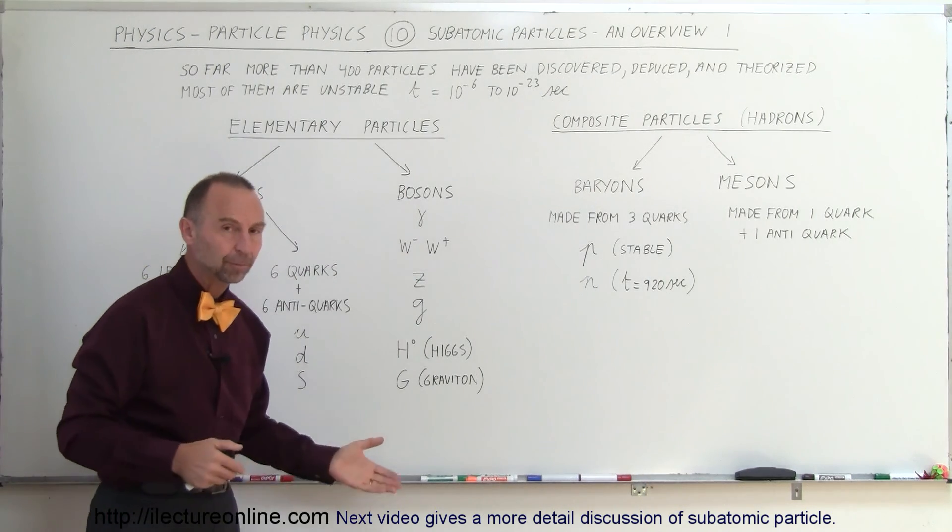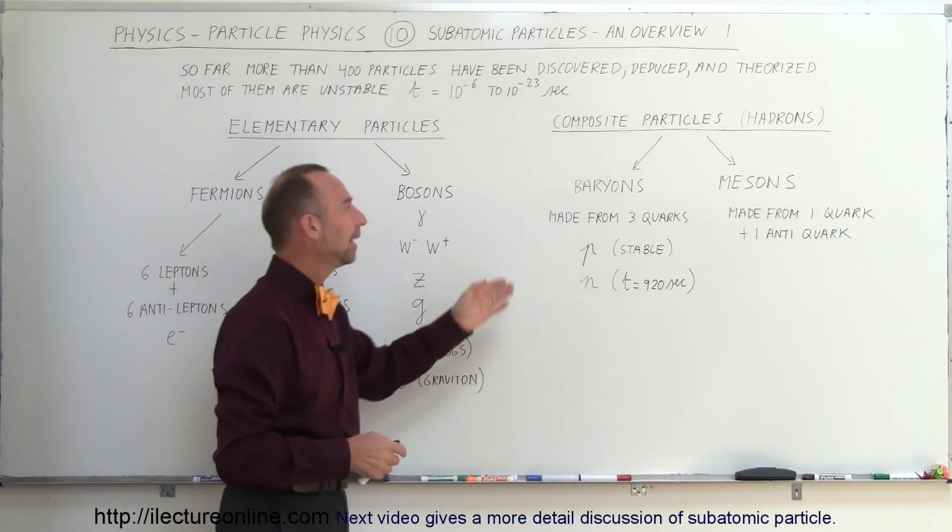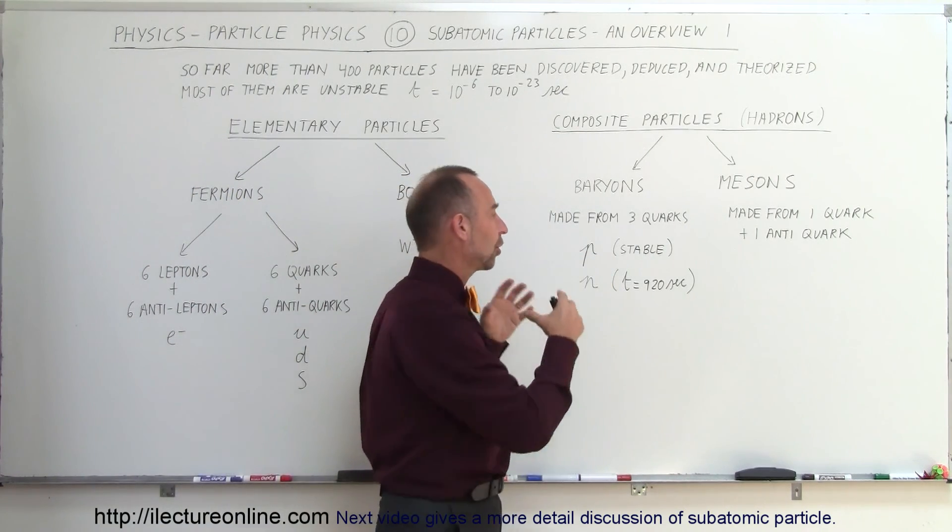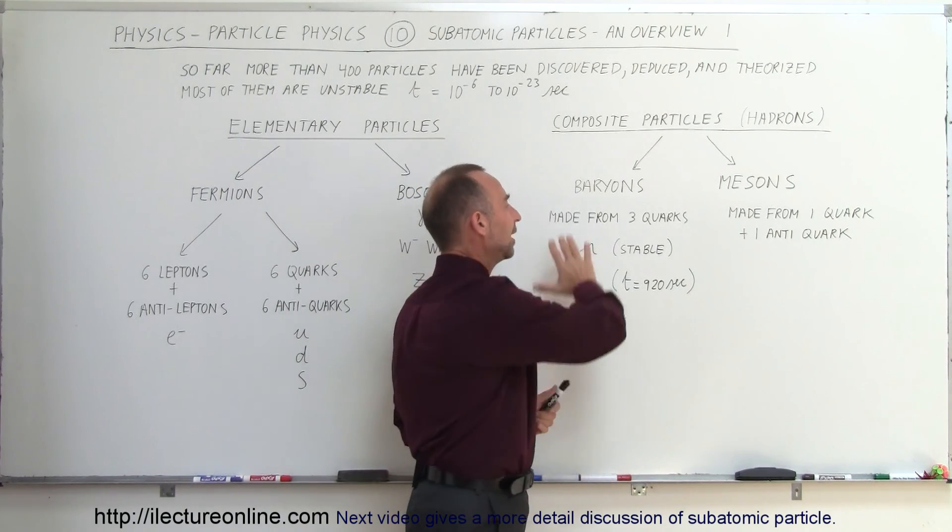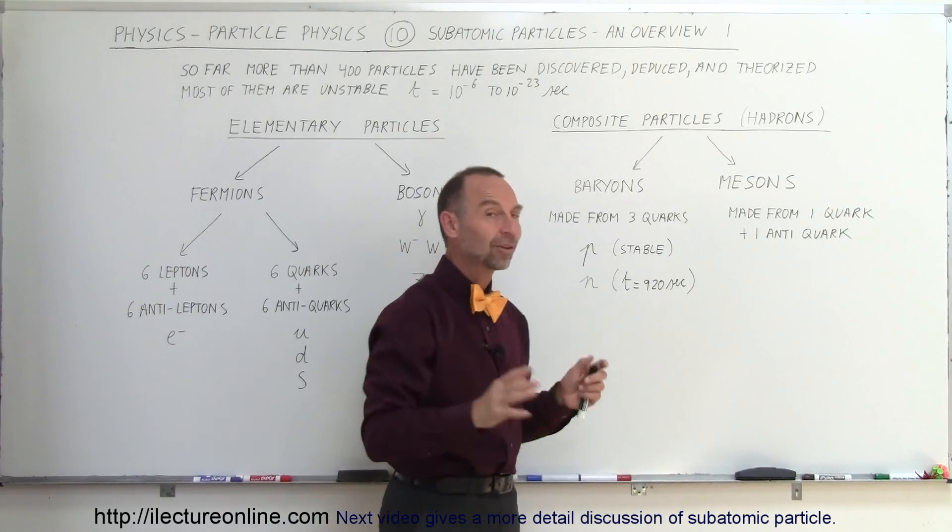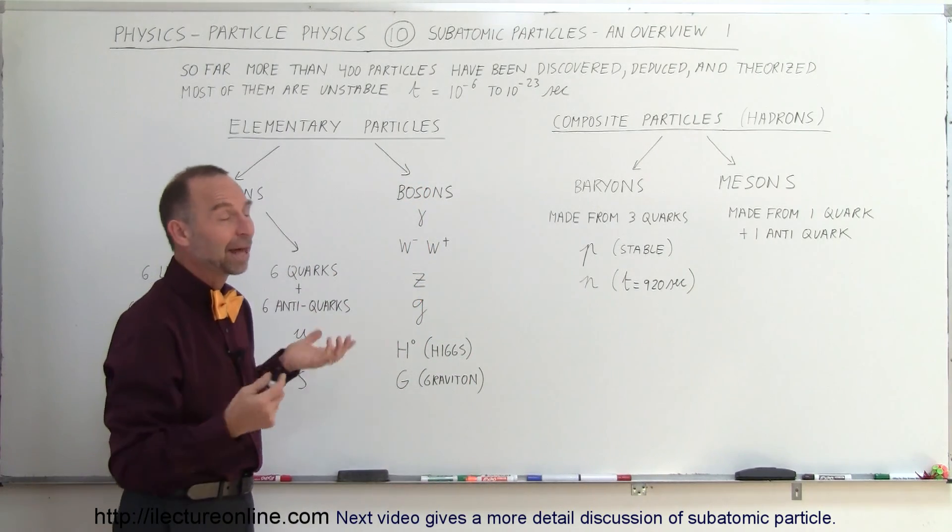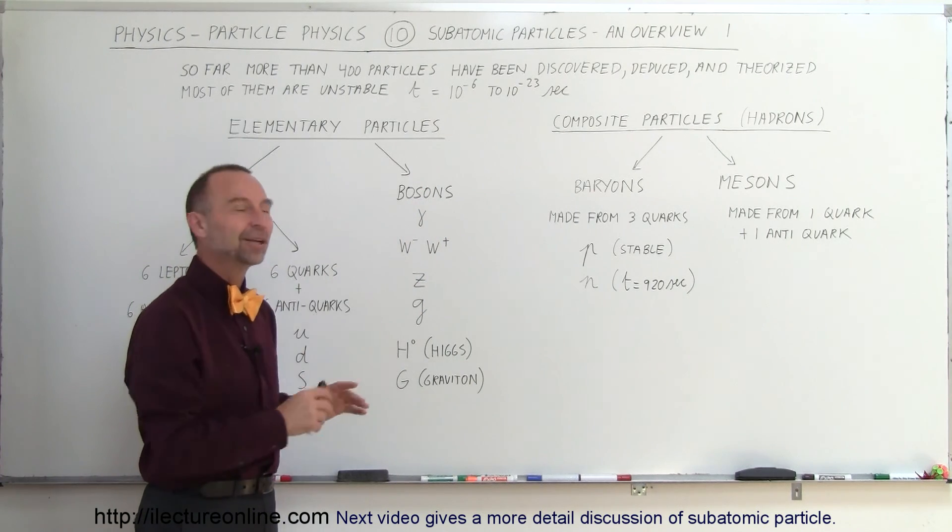Bosons tend to be the interaction particles, the mediating particles, for the four forces in the universe. And the composite particles are conglomerates of quarks, which are used to make up matter in the universe. So most of the mass in the universe is made up of these particles. And of course, that's when we ignore dark matter, which is the predominant matter in the universe, and we don't yet know what the structure of that is, but that's for a later video as well.